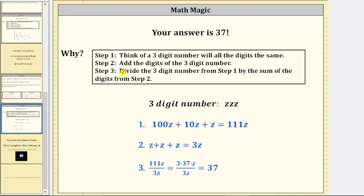Step two, add the digits of the three-digit number. And because all three digits are z, we would have z plus z plus z, which equals 3z.